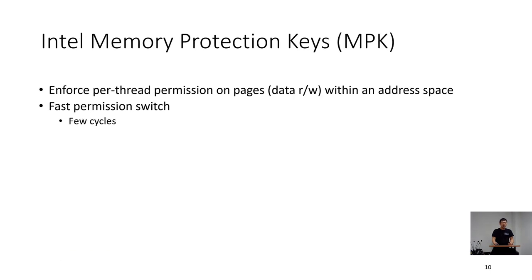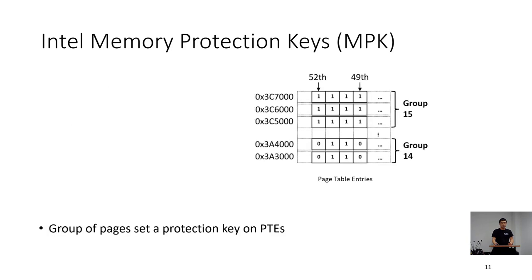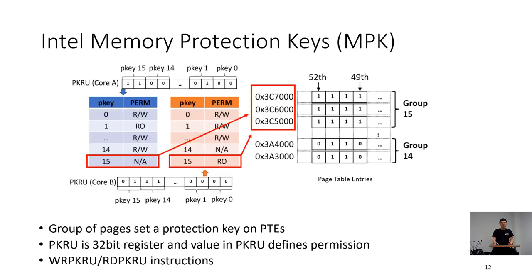Before moving on, I am going to provide background knowledge for the rest of the paper. Intel MPK is a newer hardware feature introduced in recent Intel CPUs. It enforces per-thread permission on memory pages within an address space, and switching permission is fast. Each group of pages sets a protection key on their page table entries. PKRU is a new 32-bit register in a core. A value in the PKRU register defines permissions on each protection key. WRPKRU or RDPKRU instructions are introduced to read and write the PKRU value.